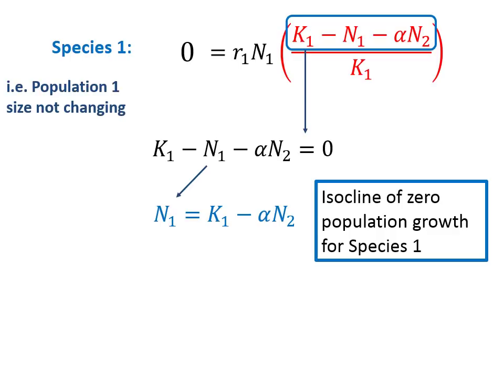This gives us what we refer to as the zero population growth isocline for species 1. When the species 1 population is equal to its carrying capacity, minus the product of the competitive effect of species 2, it will be stable in population and not change. Now logically this also makes sense. When we were just considering the logistic growth model, the stable population size was the carrying capacity. Now that we have competitors to worry about, the stable population size is being reduced.